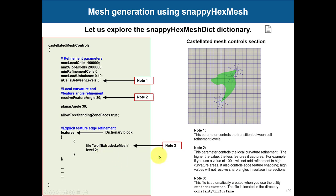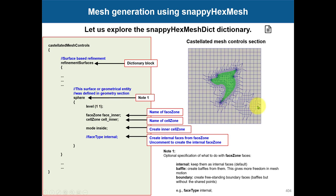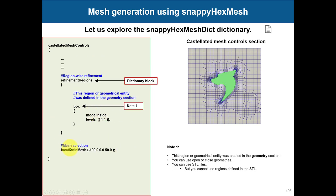For feature refinement, you use the surfaceFeatureExtract utility to create an EMesh file, which then automatically performs edge refinement. The refinement level numbers represent subdivision count relative to the background mesh. The first number is the minimum value and the second is the maximum, which is related to curvature - wherever you have a lot of curvature, more cells are added. You can use values like two-two or four-four, and also control global and local parameters per STL surface.